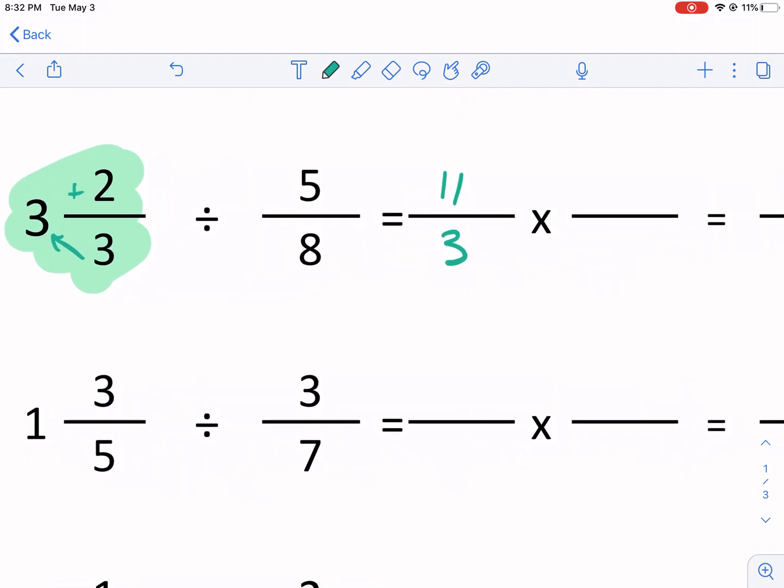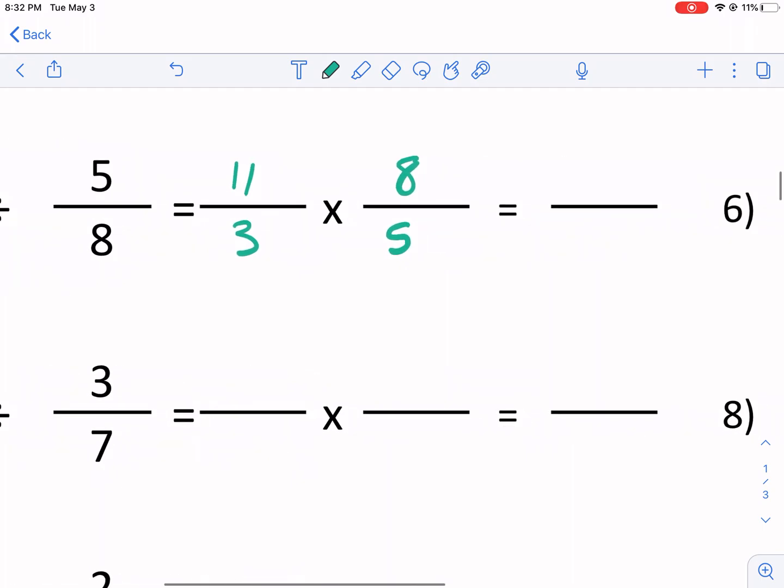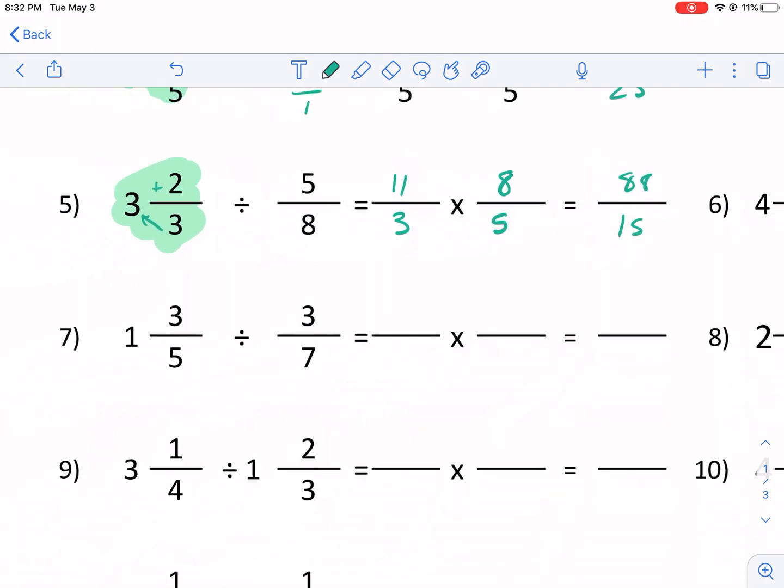Change. We already changed it. We have to divide to multiplication right there. And then we got to flip this guy. So this guy is going to become eight over five, 11 over three times eight over five. That's 88 over 15. Final answer.